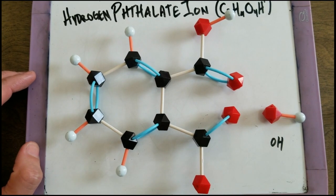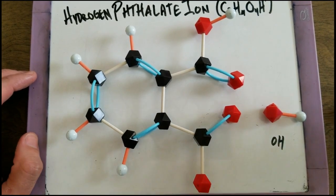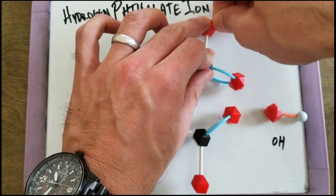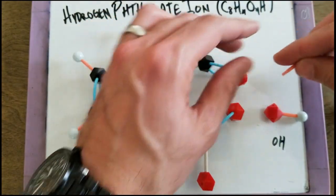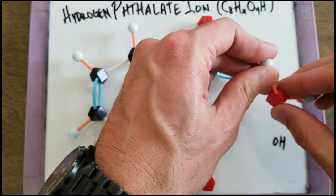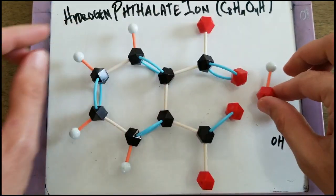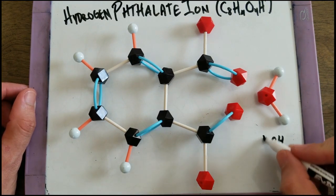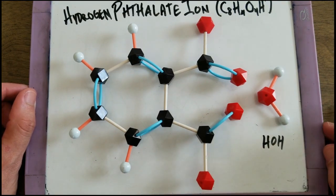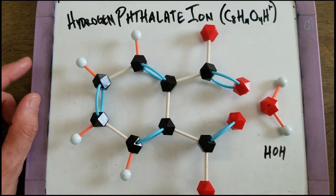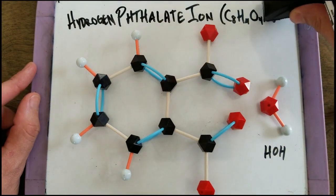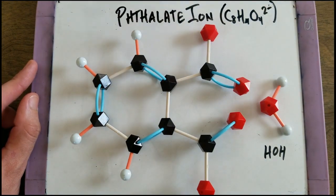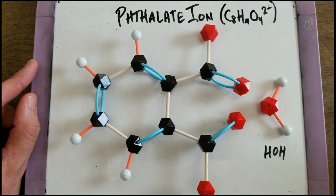And it's really only reacting with the hydroxide part of sodium hydroxide, so we'll eliminate this. And what happens in this reaction is that each hydrogen phthalate ion will lose a hydrogen acting as an acid and give it to the hydroxide ion.